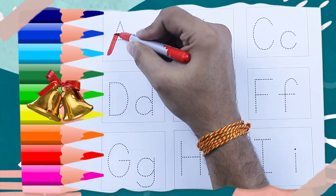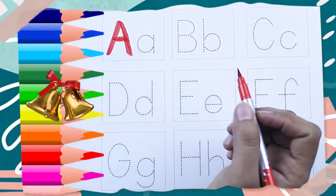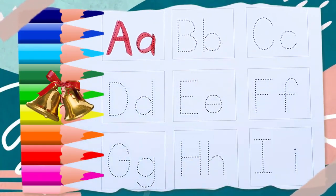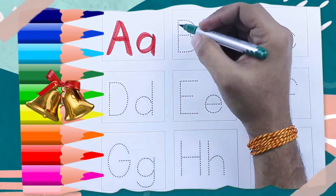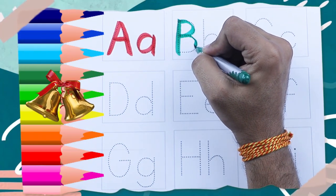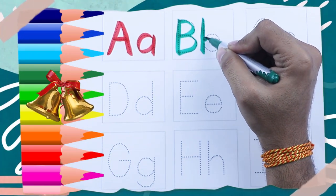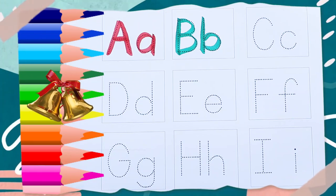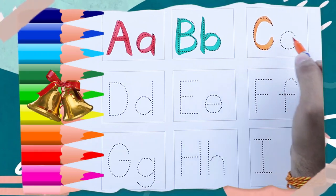Red color capital A — A for Apple. Red color small a — a for Apple. Orange color, green color — capital B — B for Ball. Green color small b — b for Ball.